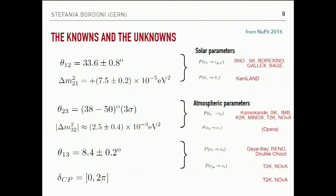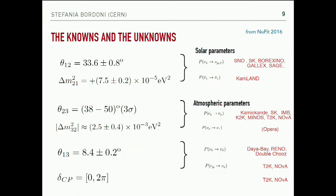The current status of knowledge of those parameters is summarized here. The solar parameters and the main experiments that contributed to those measurements are shown. Concerning the atmospheric parameters — theta_23 and delta m squared_32 — Kamiokande, Super-Kamiokande, and currently T2K and NOvA are contributing. Then there is theta_13 and delta CP. These are the current values from one of the latest global fits, which puts together all the measurements from the different experiments.